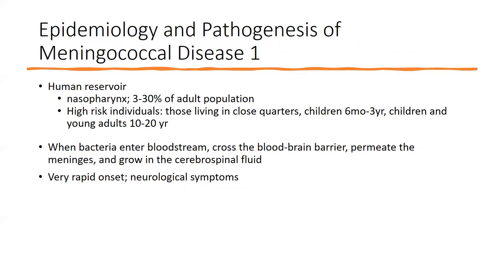The nasopharynx is the reservoir — some people are carriers. People at higher risk include those living in close quarters, children ages 6 months to 3 years, and children and young adults ages 10 to 20, especially those going to college. The bacteria can enter the bloodstream, cross the blood-brain barrier, permeate the meninges, and then grow and proliferate in cerebrospinal fluid. Onset of symptoms is rapid thanks to its endotoxin.